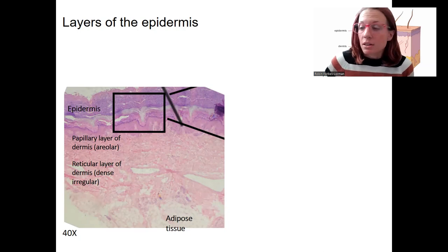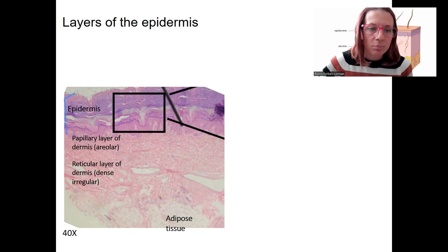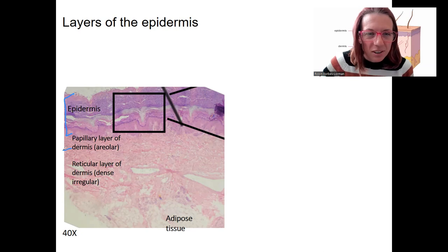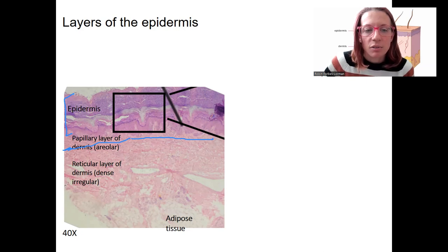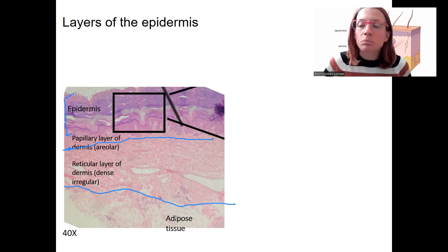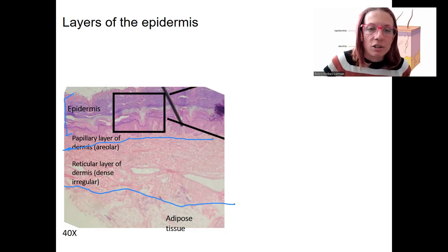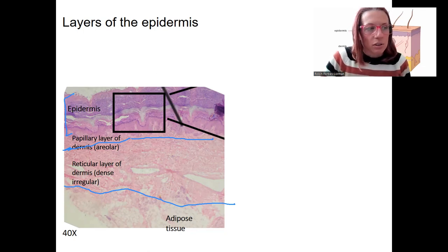You've seen these layers of the skin before — the epidermis being this entire purple piece all the way down. We've got our papillary layer of the dermis, then our reticular dermis below that, which is dense irregular tissue. Below that, our hypodermis is made of adipose tissue. We're going to zoom in to the layers of the epidermis — kind of this square right here.